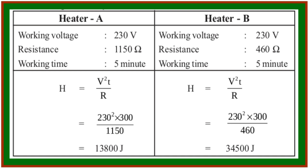H equals V² divided by R into T. That means 230² into 300 divided by 460, giving 34,800 J for Heater B.